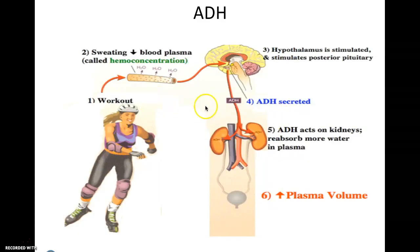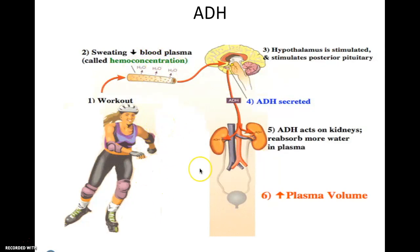When your urine is more clear without a yellow tint, it means there wasn't much ADH released, so water wasn't being reabsorbed — more water remains in the urine. For example, if you're exercising and sweating a lot, your water concentration drops and solute concentration rises. Your hypothalamus signals the pituitary to secrete ADH; it travels to the collecting duct, increases water reabsorption, and your urine becomes darker due to the higher solute concentration.